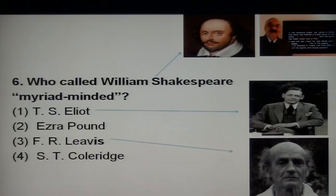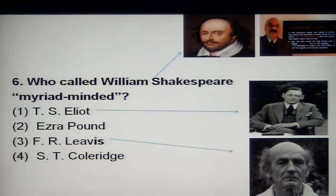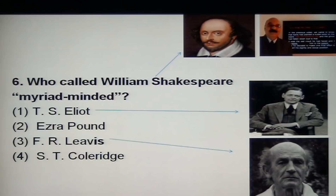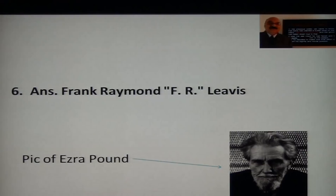Next question: Who called William Shakespeare 'myriad-minded' or 'multi-minded'? Options include T.S. Eliot, Ezra Pound, F.R. Leavis, and S.T. Coleridge. You can see pictures of these critics on screen. The answer is Frank Raymond Leavis — F.R. Leavis. You can also see the picture of Ezra Pound in this slide.